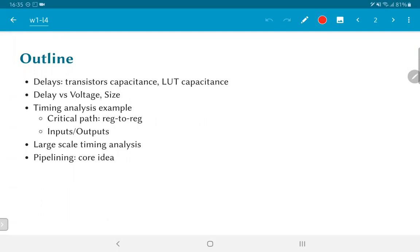We'll then take up the problem of timing analysis by taking an example and show how the critical path can be computed for a circuit that consists of both sequential as well as combinational elements. Briefly touch upon the topic of large scale timing analysis without going into algorithms and just look at the core idea of pipeline very briefly.